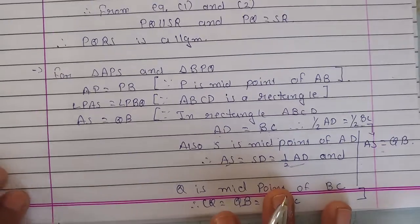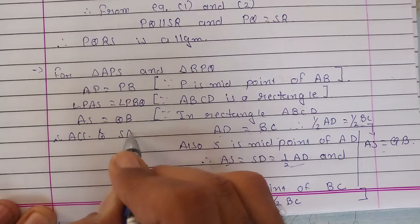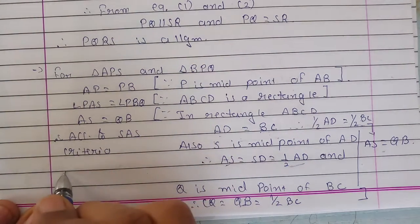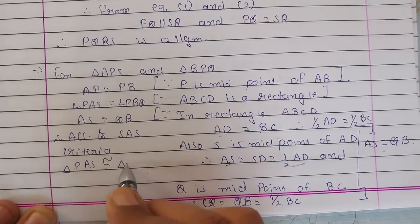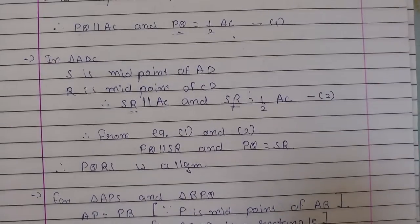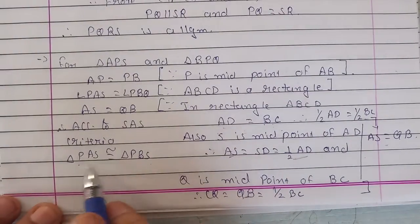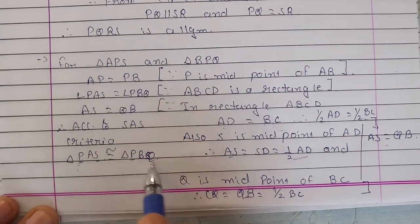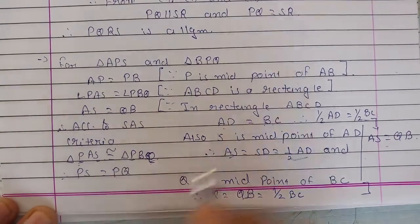This means according to side angle side criteria, triangle PAS is congruent to triangle PBQ. The corresponding parts will be equal. PS and PQ will be equal. So PS will be equal to PQ.